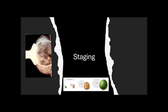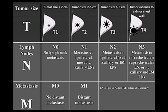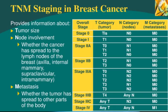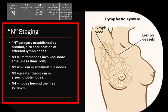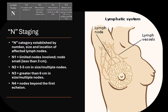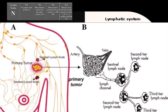Staging indicates the extent of disease at the time of diagnosis. It takes into account the size of the tumor (T-stage), any lymph node involvement (N-stage), and metastases that may have occurred (M-stage) — collectively referred to as the TNM staging system. The T category describes the apparent extent of the tumor: T1 equals tumor confined to site of origin; T2 equals tumor has extension to adjacent tissues; T3 equals advanced tumor invading regional area; T4 equals massive tumor. The N category is established by number, size, and location of affected lymph nodes: N1 equals limited nodes involved, nodes small, less than 3 cm; N2 equals 3–5 cm in size or multiple nodes; N3 equals greater than 6 cm in size or multiple nodes; N4 equals nodes beyond the first echelon.